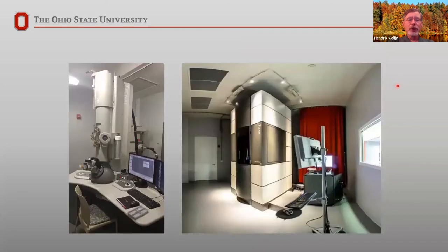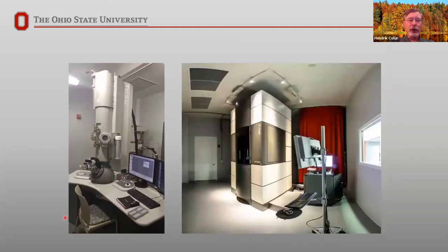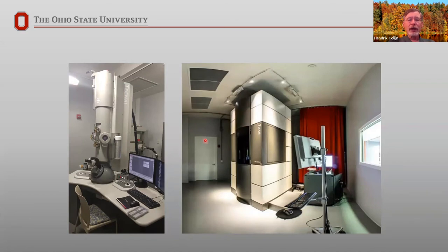The microscopes themselves look something like this. This is our Tecnai 30, with a 300 kV electron source at the top — electrons accelerated to 300 kilovolts — coming down through the condenser lenses, the sample on the center line, magnifying lenses below, and the viewing screen in the fishbowl at the bottom. Some of our other microscopes, like one of our Titans, have a similar column but sitting inside a box to minimize environmental disturbances, with people moved outside the room — a much bigger footprint, but necessary for ultra-high resolution.